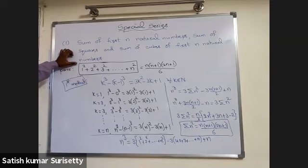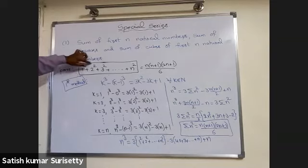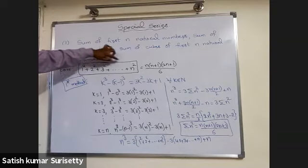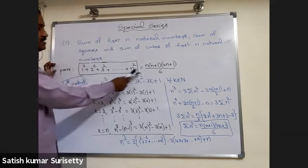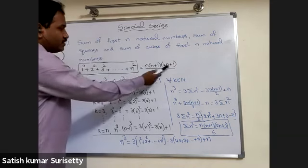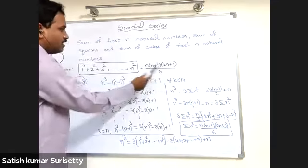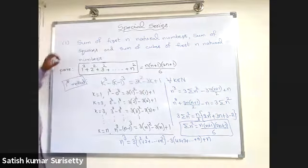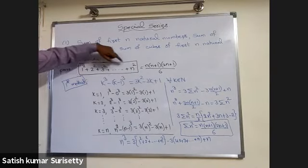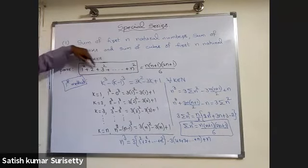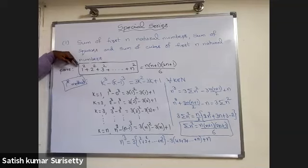Now, sum of squares of n natural numbers: 1 squared plus 2 squared plus 3 squared and so on, n squared. This can be proved as n into n plus 1 into 2n plus 1 upon 6. Note that 1 squared, 2 squared, 3 squared are not in arithmetic progression, so you cannot apply the AP sum formula.